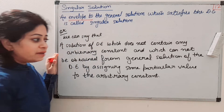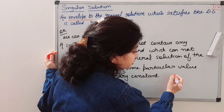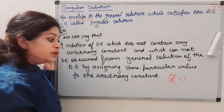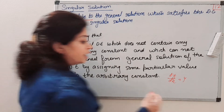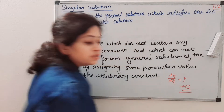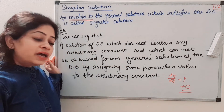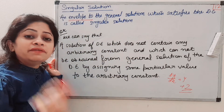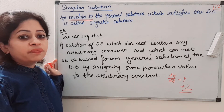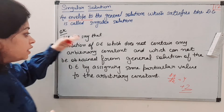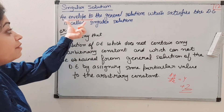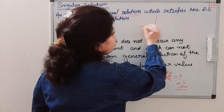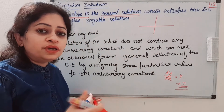Suppose we have a differential equation and we get a general solution — that means the solution which has arbitrary constants is called the general solution. If we assign any particular value to those arbitrary constants, that is called the particular solution. Now, what is a singular solution? First of all, it is the envelope of the general solution. What is an envelope? Suppose in the general solution we got a family of curves.